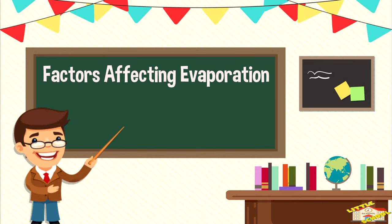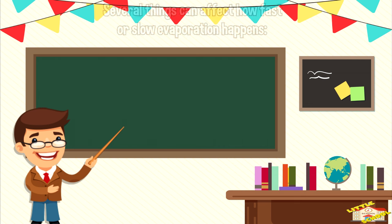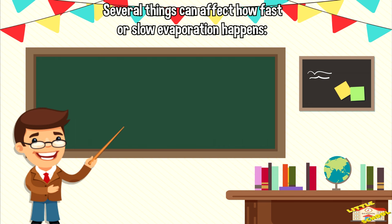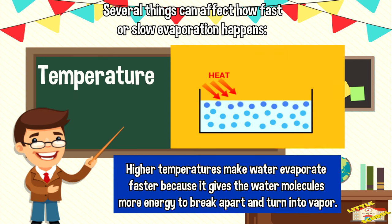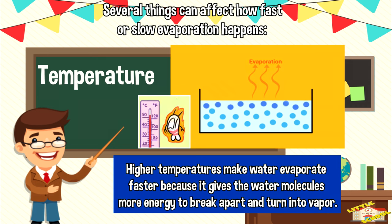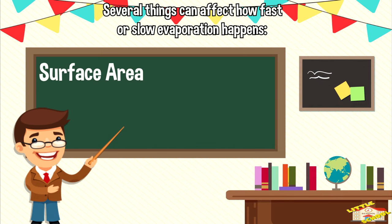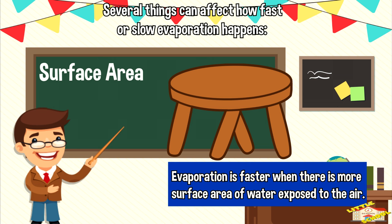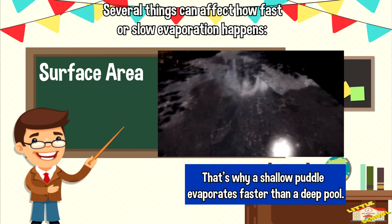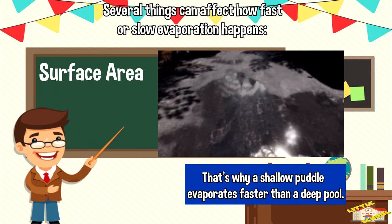Several things can affect how fast or slow evaporation happens. Temperature: higher temperatures make water evaporate faster because it gives the water molecules more energy to break apart and turn into vapor. Surface area: evaporation is faster when there is more surface area of water exposed to the air. That's why a shallow puddle evaporates faster than a deep pool.